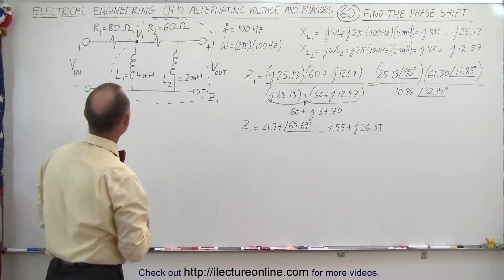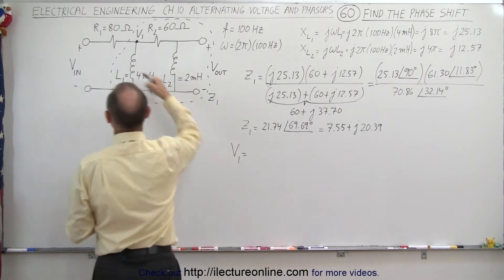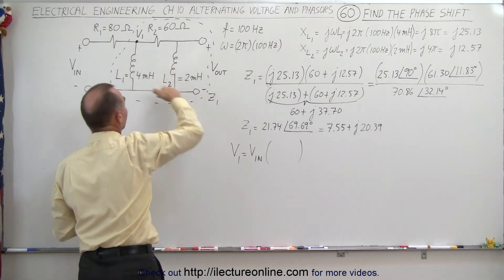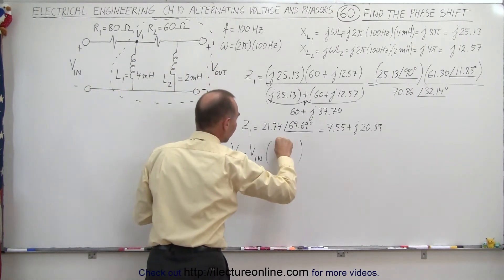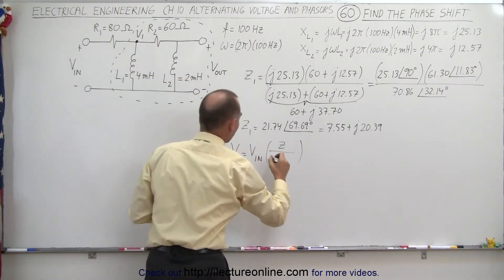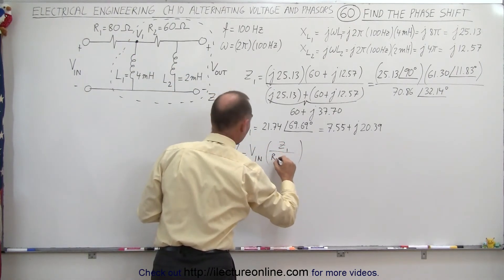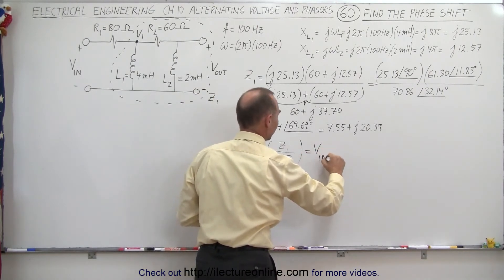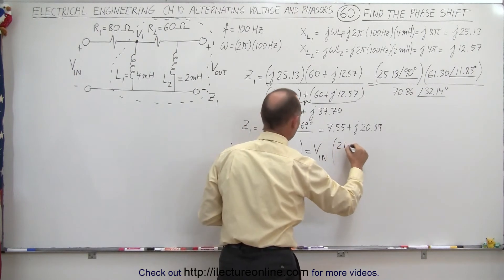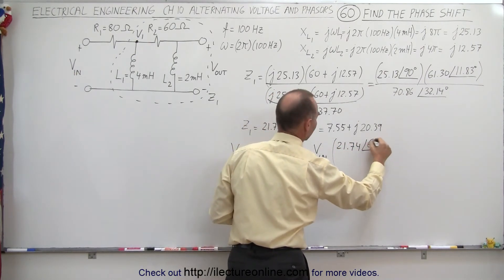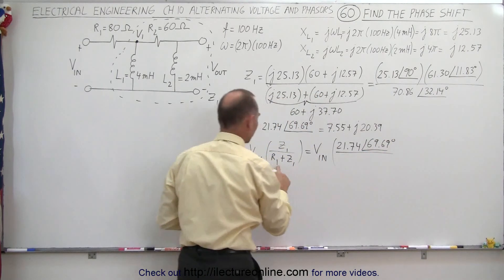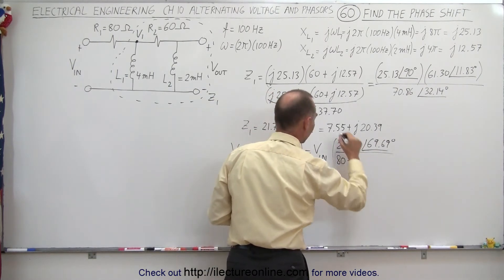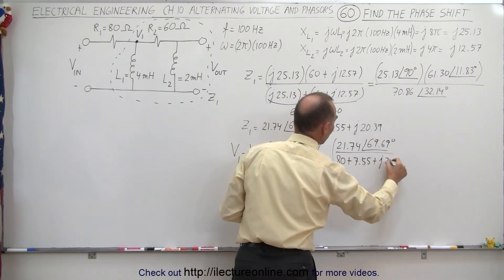So now we're ready to find V1. V1 can be found by taking the input voltage Vin and multiplying it times the ratio of the voltage drop across here, which depends on the impedance Z1, divided by the impedance of the whole circuit, which would be R1 plus Z1. For the numerator we put Z1 as 21.74 at an angle of 69.69 degrees, and in the denominator we add R1, which is 80, plus 7.55 plus J20.39.